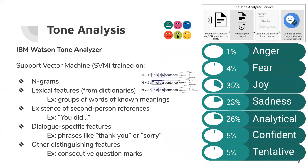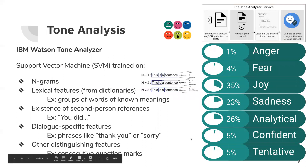We realized, though, that the summaries we were generating often lacked the style of the original transcript. So we decided to augment our data further by explicitly generating the tone of the speech to include in our training. To do that, we utilized the IBM Watson Tone Analyzer, which is implemented as a support vector machine trained on various explicitly selected features. This gives us a list of seven tones listed on the right that we could associate with each speech.